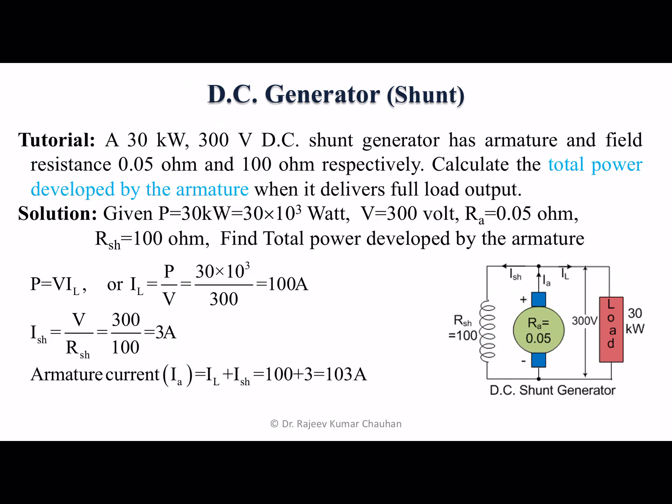This is one tutorial on the DC shunt generator. A 30 kilowatt, 300 volt DC shunt generator has armature and field resistance of 0.05 ohm and 100 ohm respectively. Calculate the total power developed by the armature when it delivers full load output.